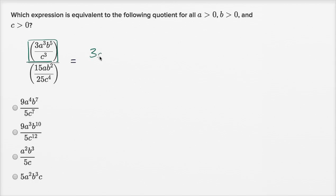So three a to the third b to the fifth over c to the third, times, so let me actually stay in that color, times the reciprocal of this business right over here. So times the reciprocal, so 25c to the fourth power over 15ab squared.